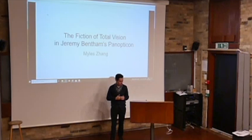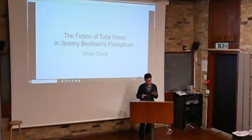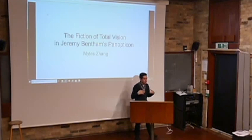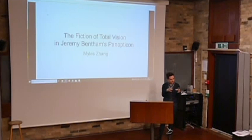My name is Miles and today I'll be briefly presenting on what I'm calling the fiction of total vision in Jeremy Bentham's Panopticon. I'll be breaking this presentation into two sections. In the first section I'll be talking about what the Panopticon is, what it accomplishes, and what the architecture looks like. In the second part I'll give a brief overview of the architectural symbolism and how it has become a social image for the construction of utopian and surveillance societies.